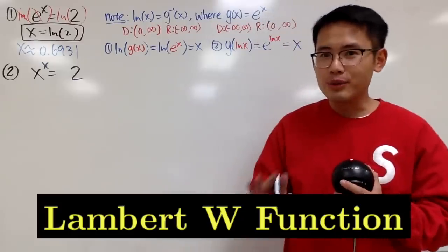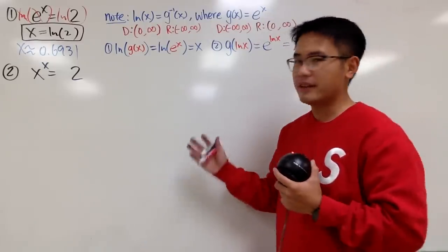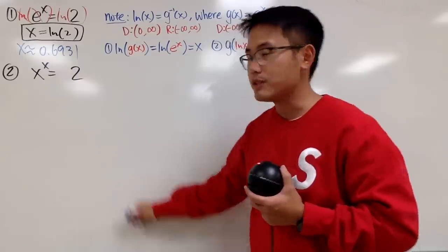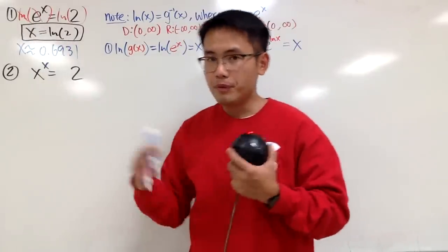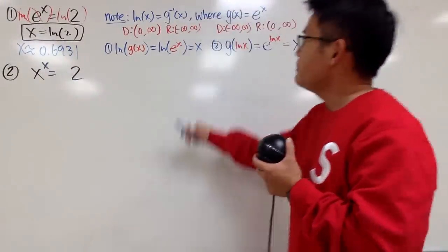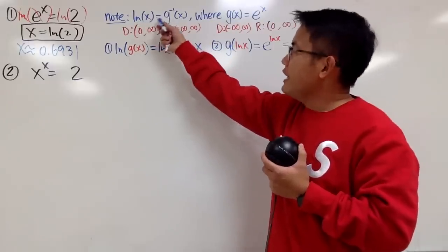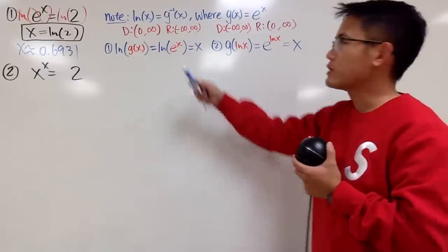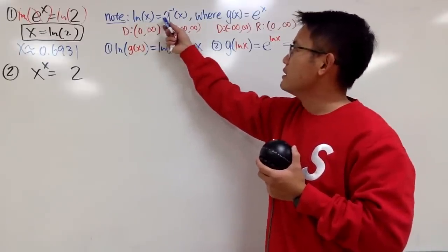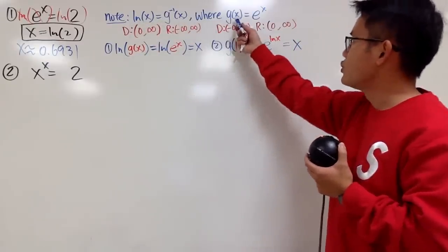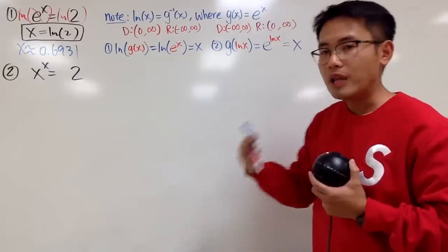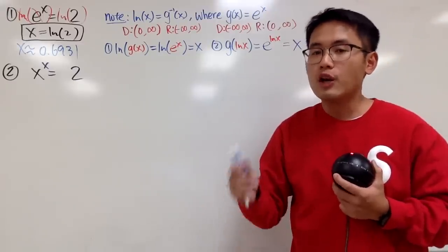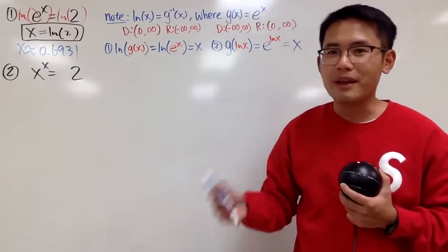And before I get into the details, I just want to make a connection between the things we just did. Alright, so let's review this real quick. Why did we take the natural log on both sides? It's because natural log is the inverse of the function e to the x. So I write natural log of x is the inverse of g, where the original g is e to the x. And whenever we're talking about functions and their inverse, we should technically talk about their domain and range.